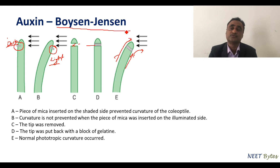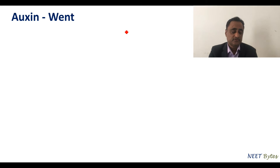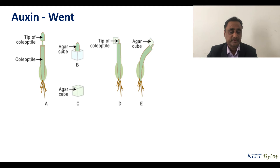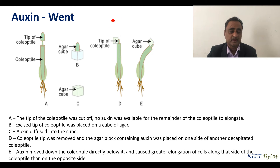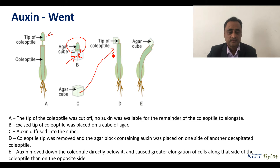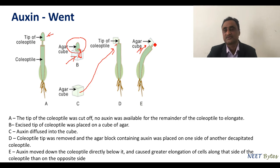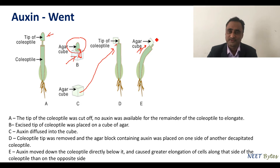The real credit goes to Went, who extracted auxin into an agar block. They cut the coleoptile tip, placed an agar cube on it so auxin diffused in, then placed the agar block asymmetrically on the cut coleoptile. More growth occurred on that side, resulting in bending. This proved that growth substances are responsible for stem growth. It was Went who coined the term 'auxin.'